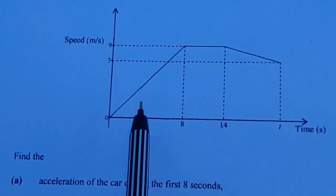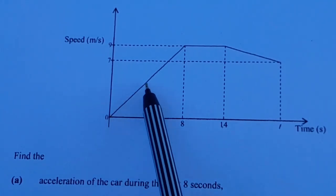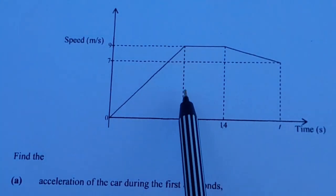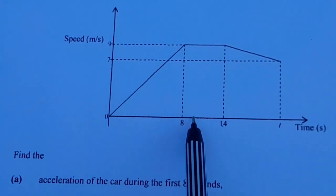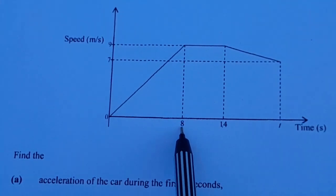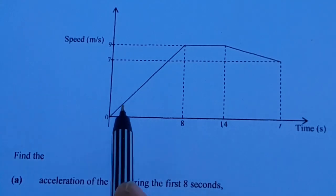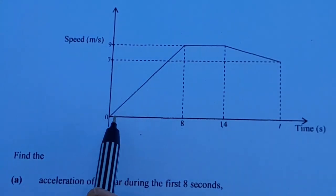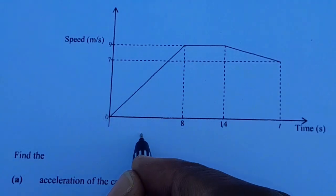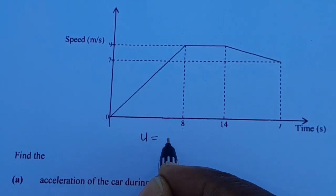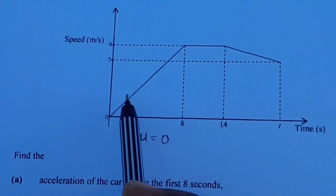They want us to find the acceleration in the first 8 seconds. To find the acceleration, we are going to collect information. You can see that the journey started from 0, so the initial velocity U is equal to 0.